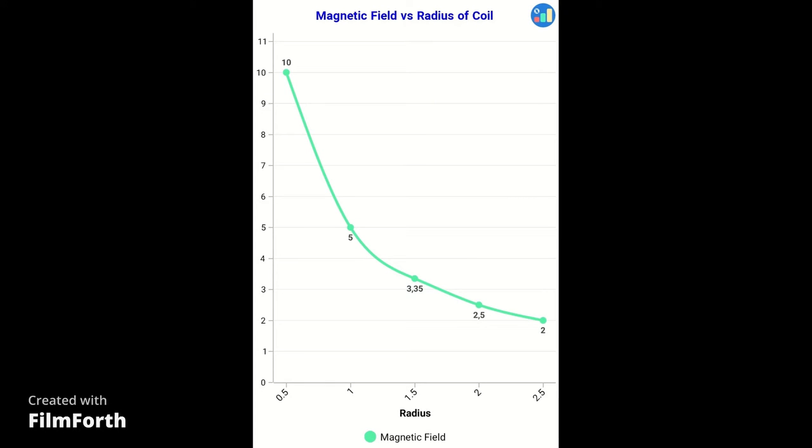And from the second graph, we can understand that increasing the radius has a decreasing effect on magnetic field.